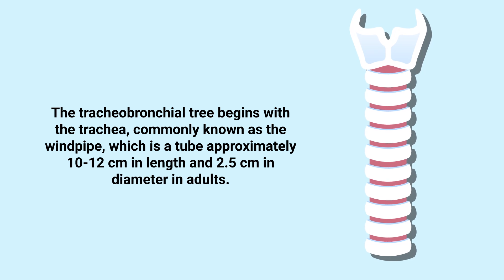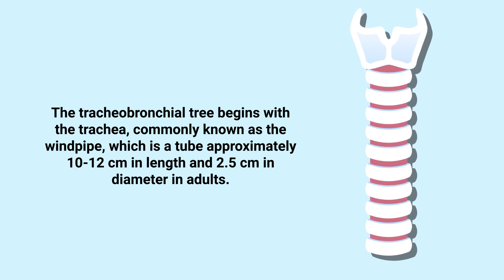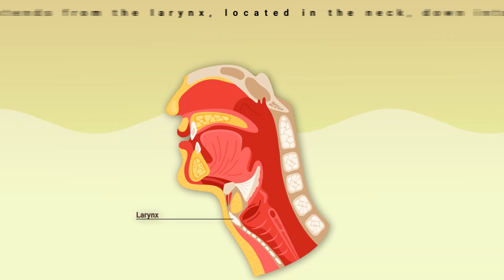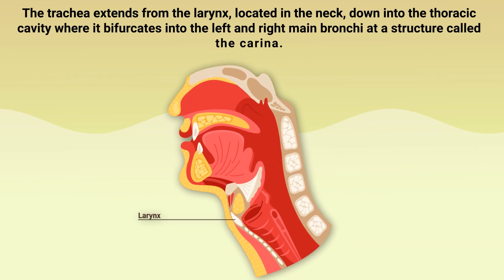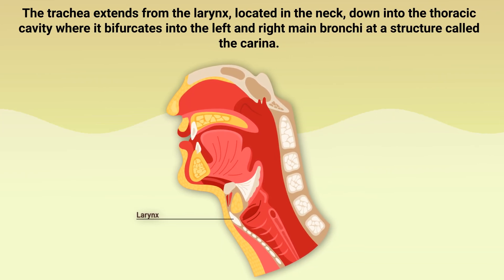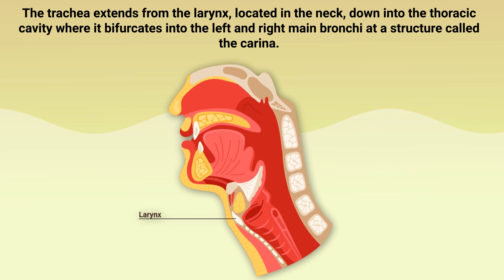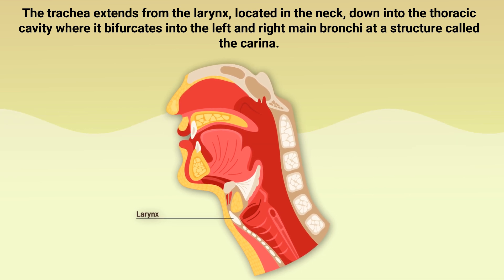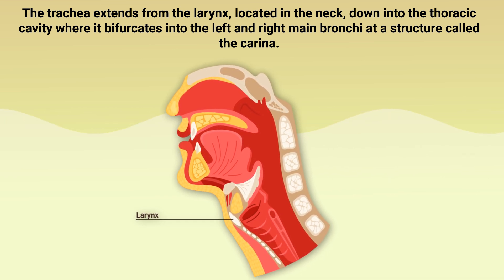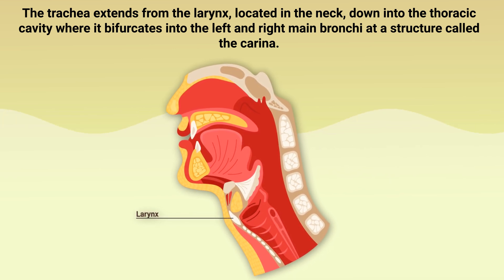The tracheobronchial tree begins with the trachea, commonly known as the windpipe, which is a tube approximately 10 to 12 centimeters in length and 2.5 centimeters in diameter in adults. The trachea extends from the larynx located in the neck down into the thoracic cavity, where it bifurcates into the left and right main bronchi at a structure called the carina.